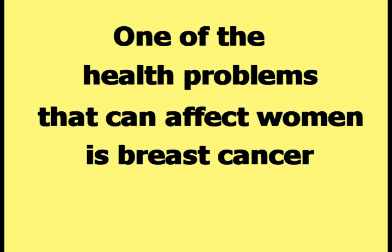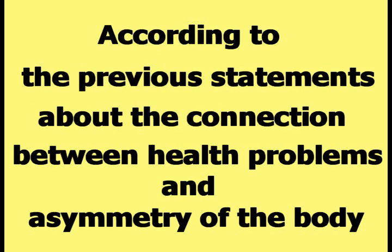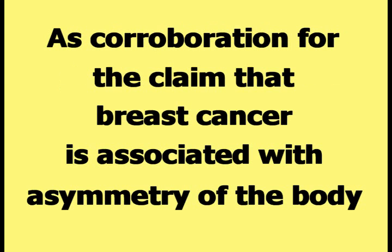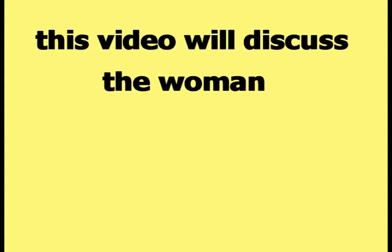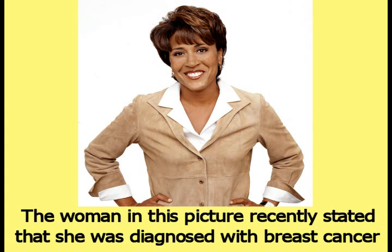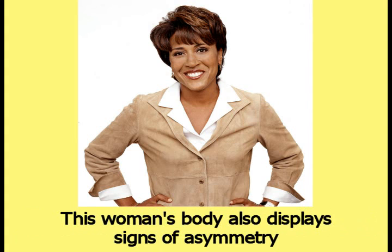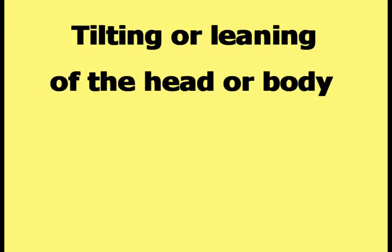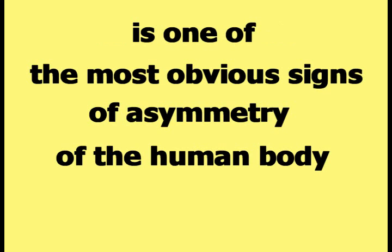One of the health problems that can affect women is breast cancer. According to the previous statements about the connection between health problems and asymmetry, the body of a woman with breast cancer should display signs of asymmetry. As corroboration for this claim, this video will discuss the woman in this picture, who recently stated she was diagnosed with breast cancer. Her body also displays signs of asymmetry, as it should according to Happy Theory. Tilting or leaning of the head or body is one of the most obvious signs of asymmetry.